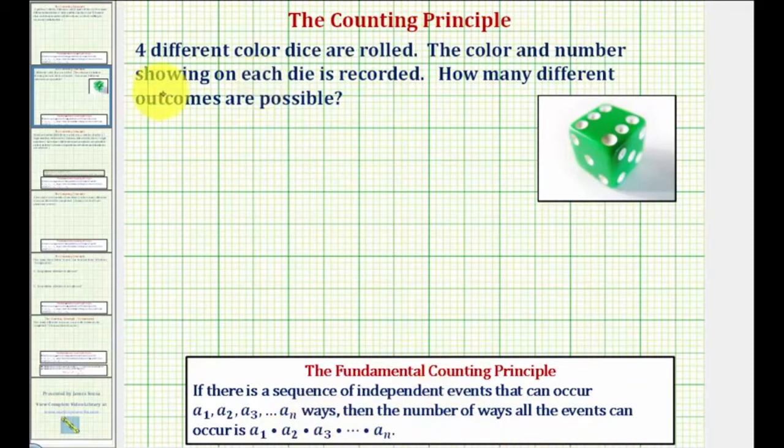So here, because we have four different colored dice, we can think of this as four independent events. So one event, two events, three events, and four events.